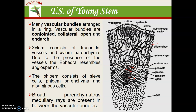The vascular bundles are collateral open because cambium is present, and the protoxylem is towards the center, so it is known as endarch vascular bundles. The xylem consists of xylem tracheids, vessels, and xylem parenchyma; however, vessels are mostly absent in gymnosperms. Due to the presence of these vessels, Ephedra has been considered an advanced gymnosperm with angiosperm affinity. The phloem consists of sieve cells, phloem parenchyma, and albuminous cells. Pith is present between the vascular bundles.